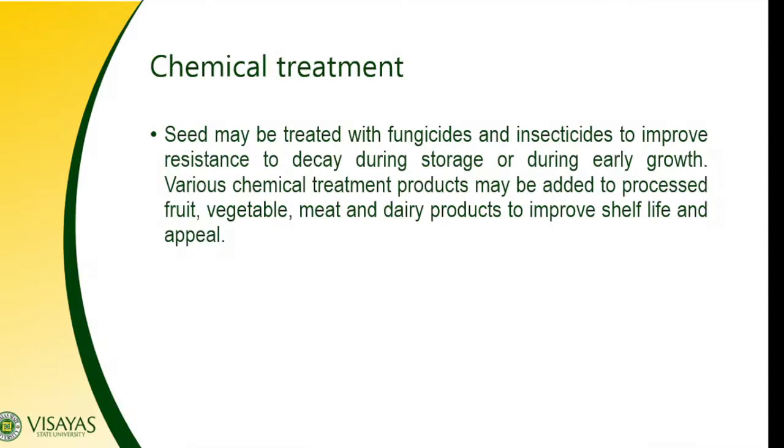The other one is chemical treatment. Seeds may be treated with fungicides and insecticides to improve resistance to decay during storage or during early growth. Various chemical treatments may be added to processed foods, vegetables, vegetable meats, and dairy products to improve shelf life and appeal. For example, in meat processing, chemicals are introduced to preserve the product and extend its shelf life for a long period.